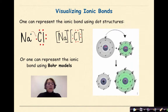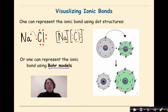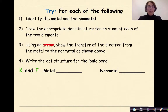We can also represent the ionic bond using Bohr models. As you can see, this Bohr model of sodium donates its one electron from the outermost shell to the chlorine atom. As a result, the atomic radius of the sodium decreases, while the radius of the chloride ion increases as it gains that one electron.